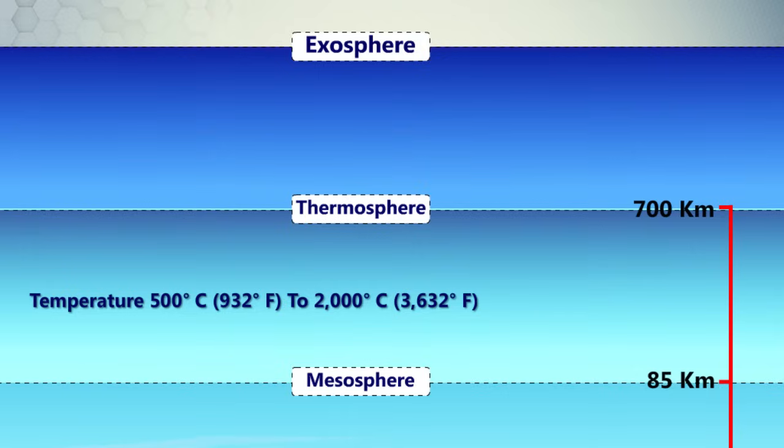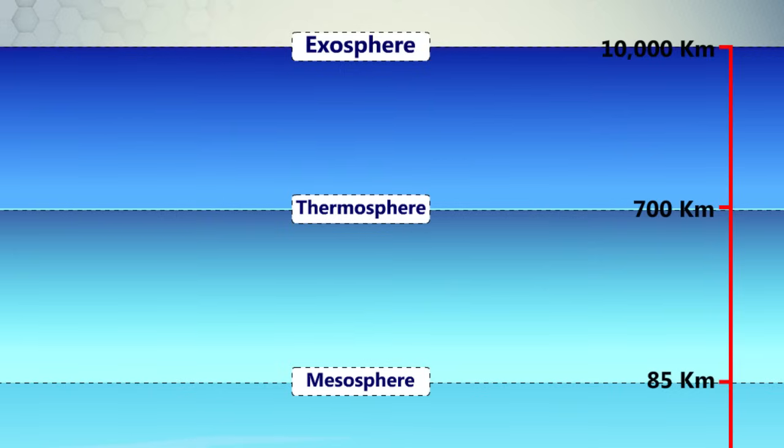The exosphere is the outermost layer of Earth's atmosphere. It extends from the exobase, which is located at the top of the thermosphere at an altitude of about 700 kilometers above sea level, to about 10,000 kilometers, 6,200 miles, where it merges into the solar wind.